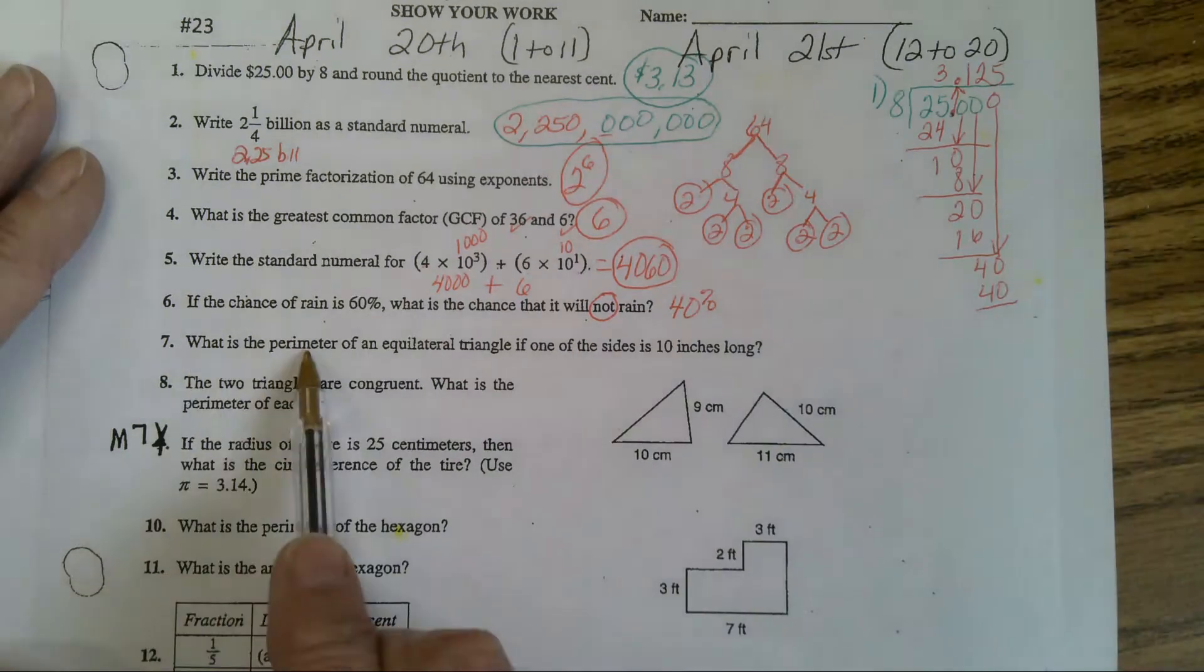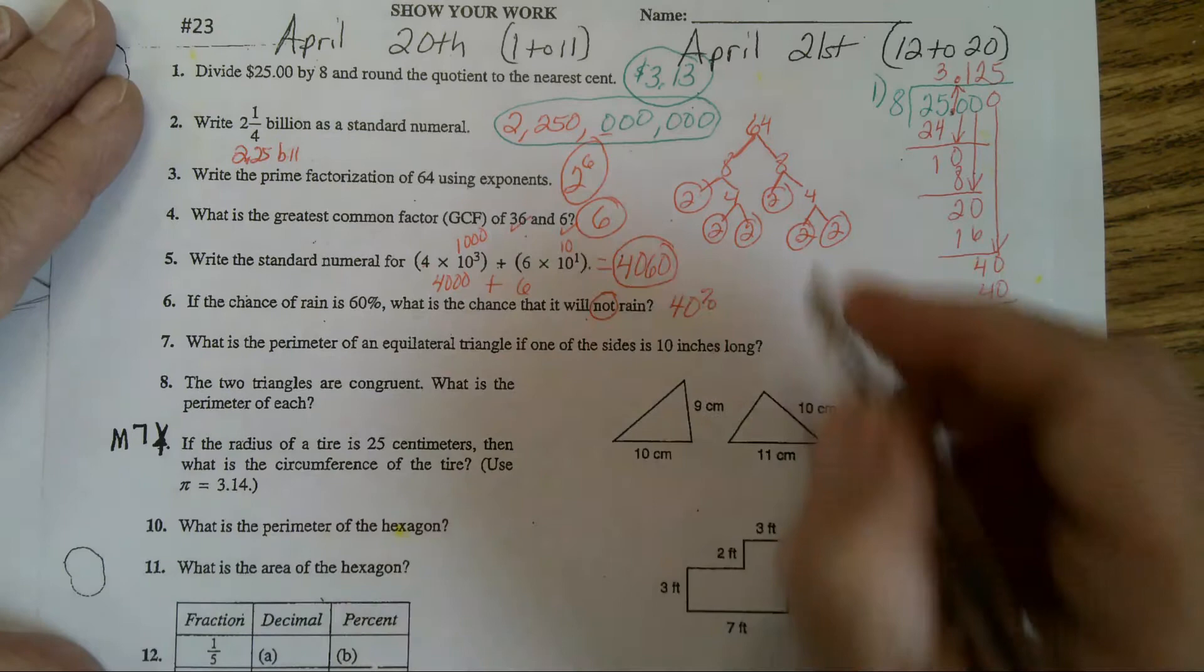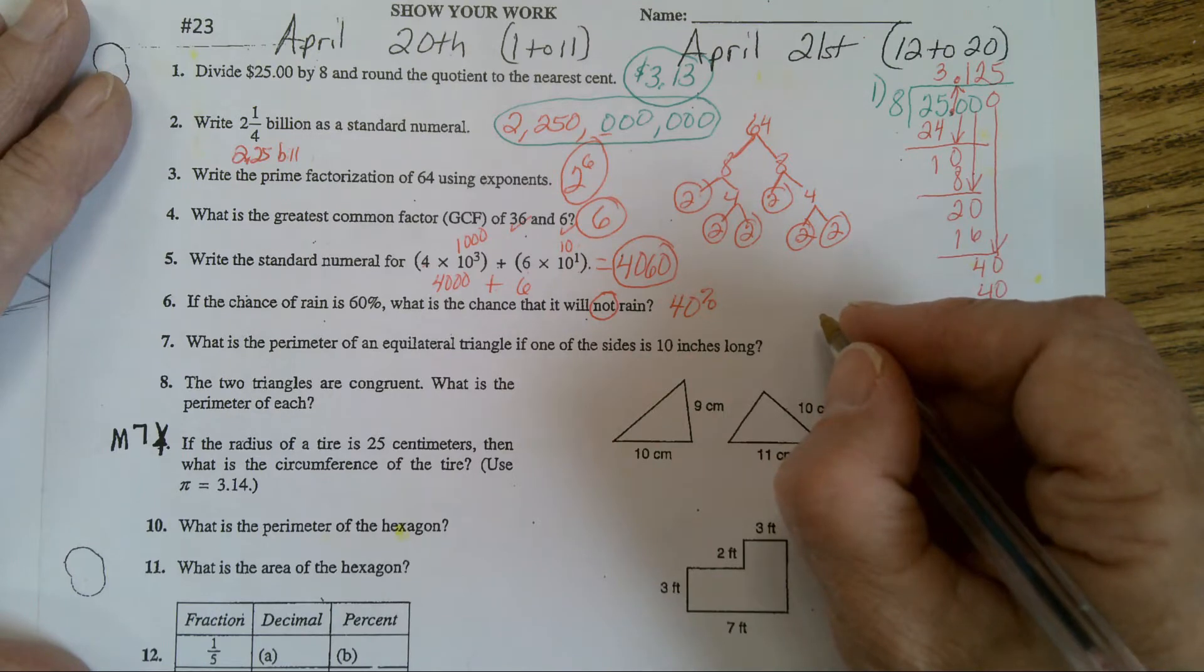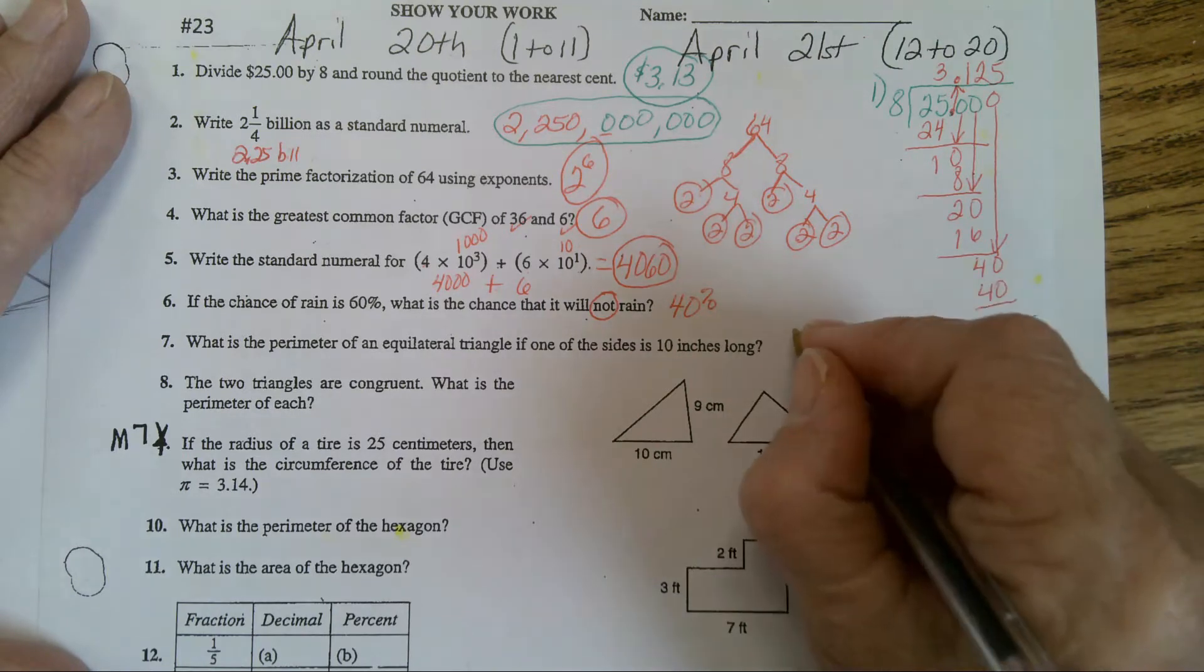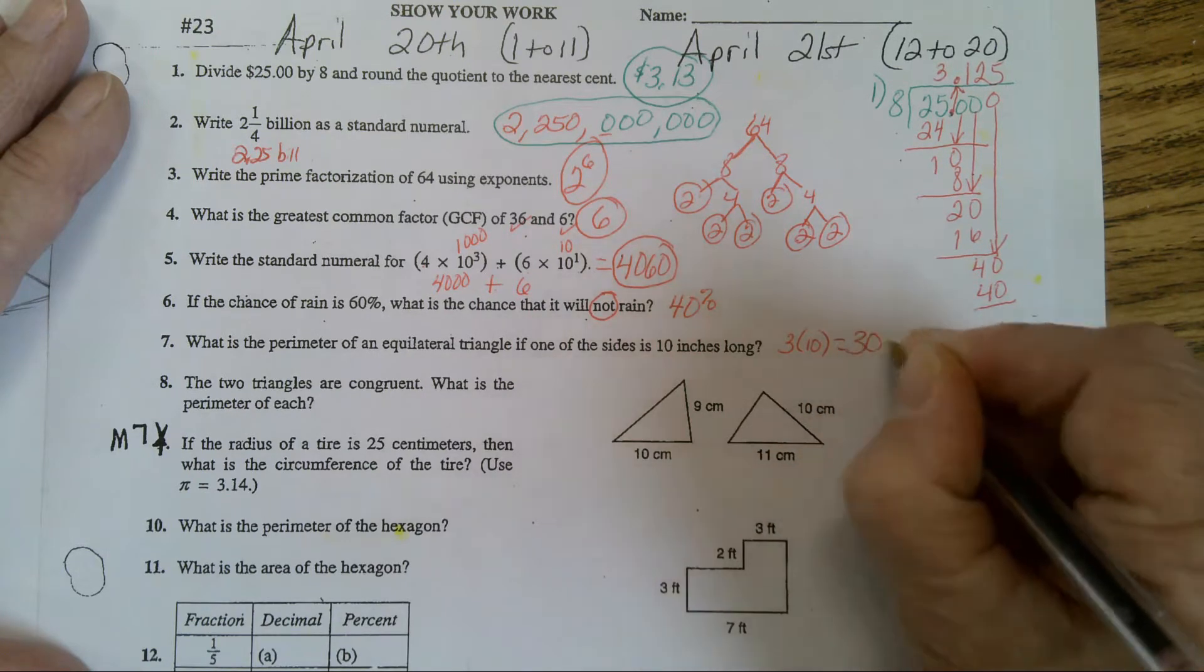What is the perimeter of an equilateral triangle if one of the sides is 10 inches long? Well, that means all of them are the same in an equilateral triangle. How many sides does a triangle have? So it's going to be 3 times 10. The answer is 30 inches.